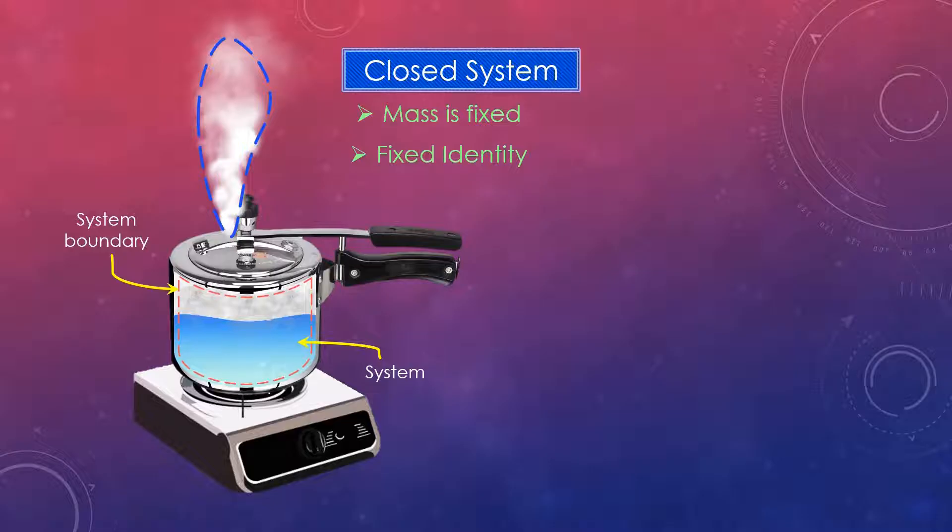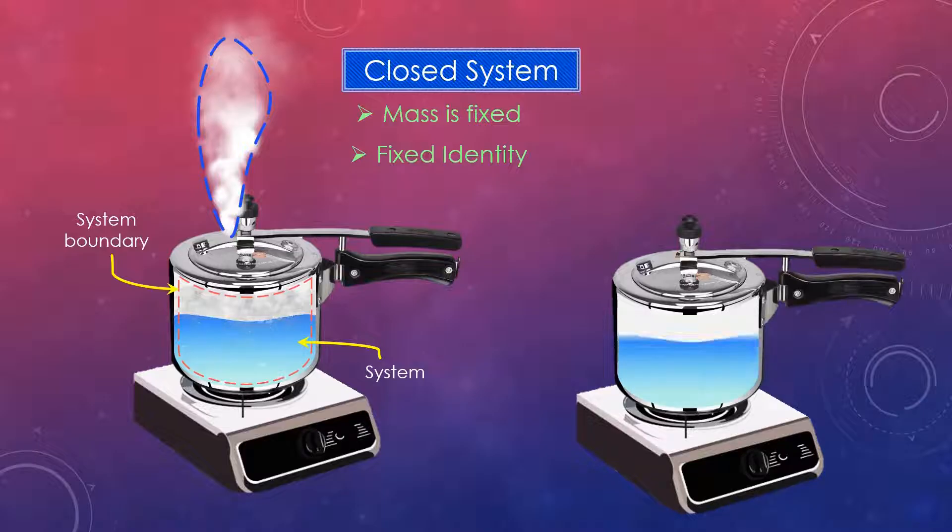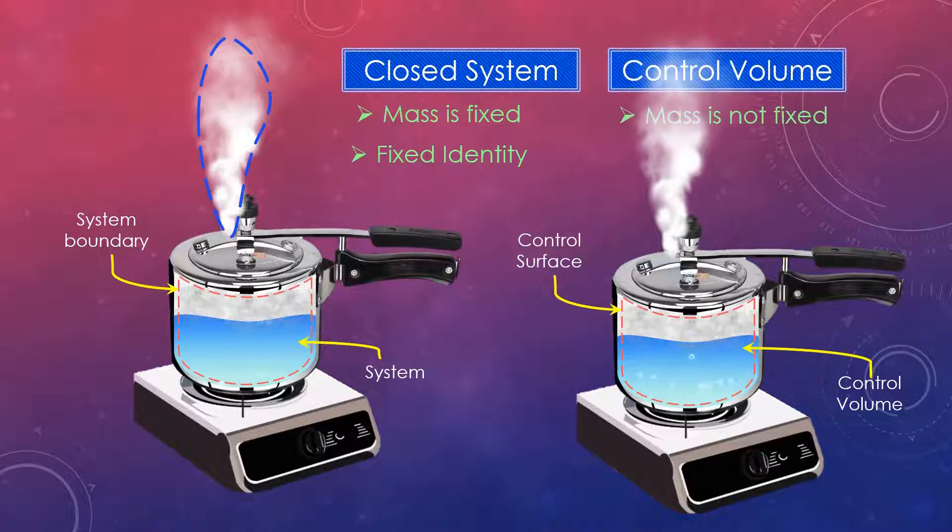In fluid mechanics it is more common to work with control volume. In the same example if we consider the region inside the cooker as a control volume then we are not concerned at all with the steam escaping the cooker. And thus the mass of the control volume decreases during this process while its volume remains constant.